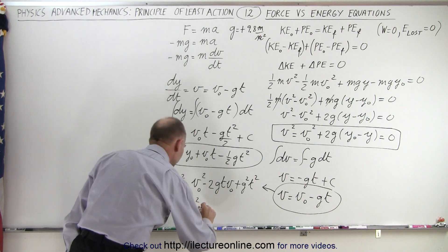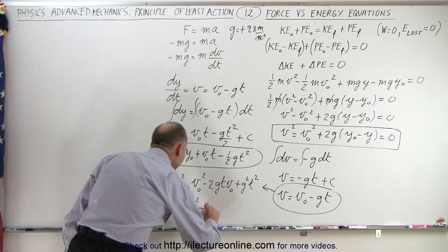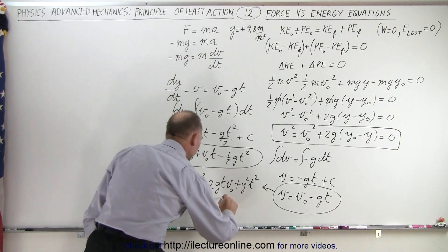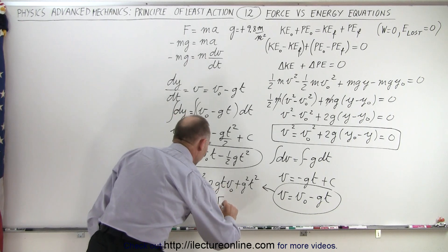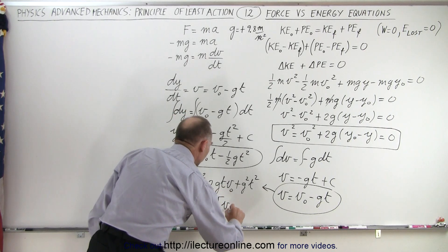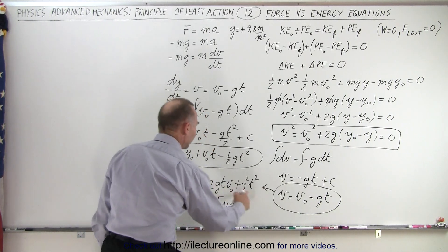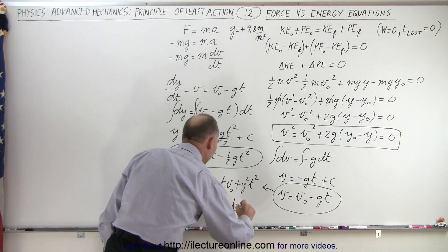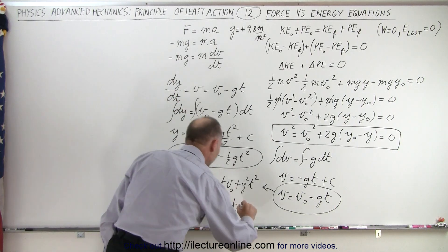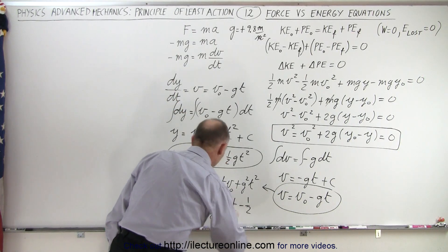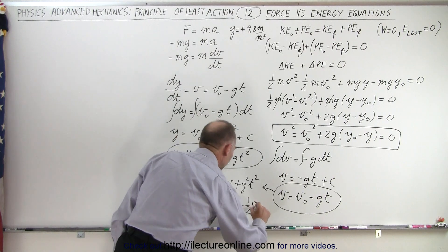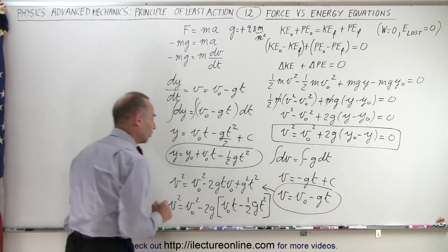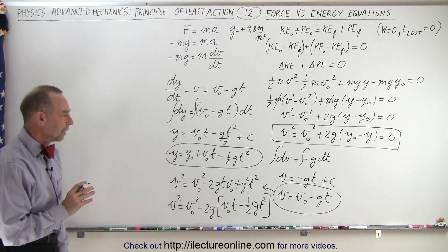Factoring out minus 2G from the last two terms, we're left with V_initial times t, and since we factored out the 2 and a minus sign, we need a minus one-half G t squared inside the bracket.